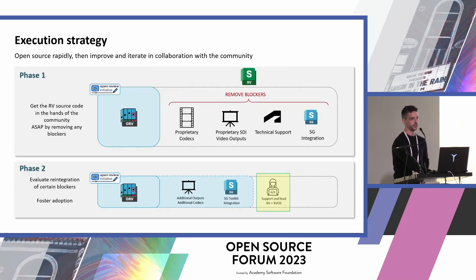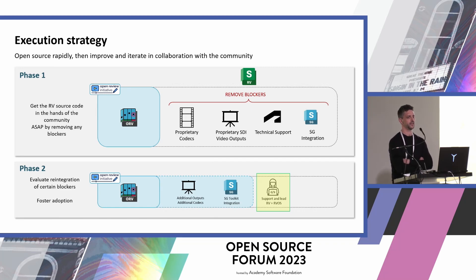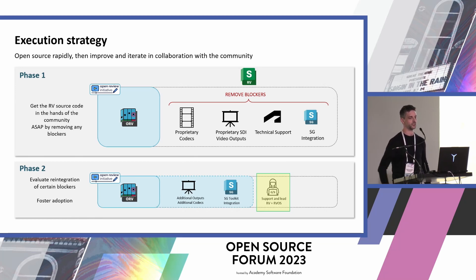Our approach was pretty simple. In the first phase, we wanted to remove any blockers preventing us from open sourcing RV — mostly removing proprietary codecs, video outputs, and the Shotgrid integration, as it contained Autodesk proprietary code. In the second phase, we would work on reintegrating the blockers removed in phase one, with the intent of bringing the open source and commercial versions as close as possible to each other. We would also heavily invest in creating a new collaboration with the ASWF community, leading the evolution of OpenRV.